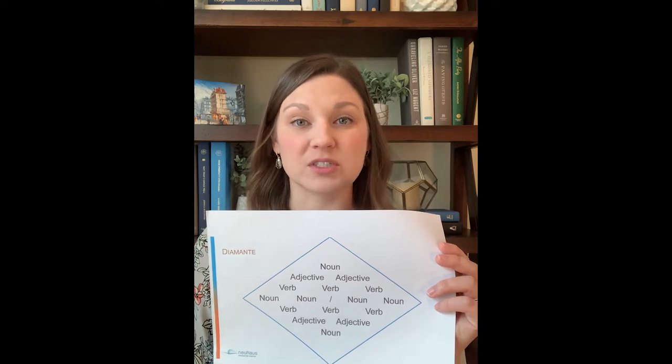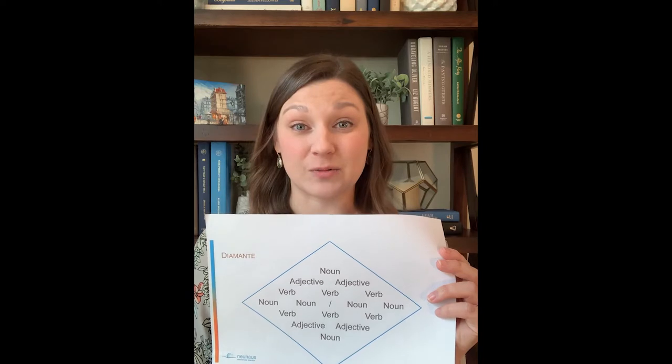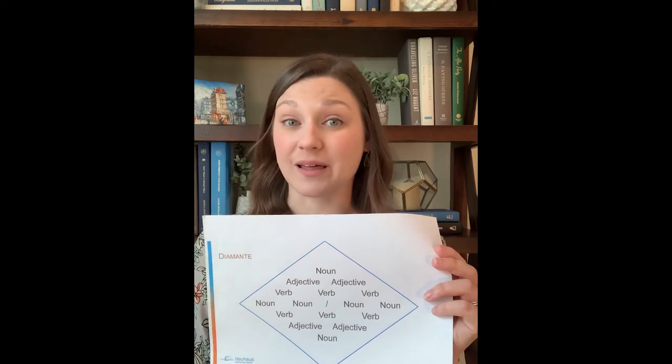The next line is two adjectives that describe your first noun. The third line is three verbs that apply to your first noun. The fourth, or middle, line is split into two parts: the first two nouns are related to the first line, and the last two nouns are related to your last line. You can see a slash indicating the switch from the first topic to the second, but you don't need to include that slash in your final poem. Then repeat all of the lines going down the poem, but in relation to the last line.